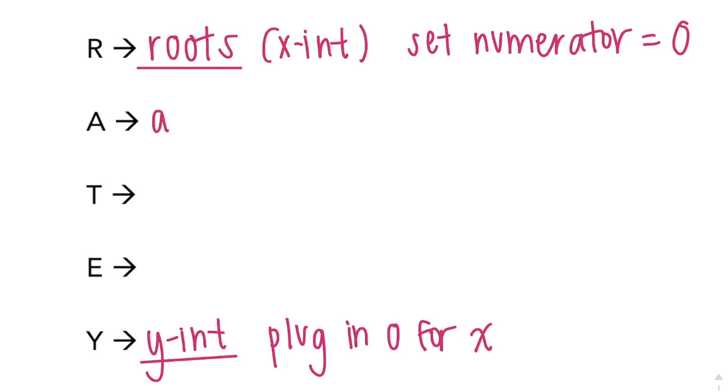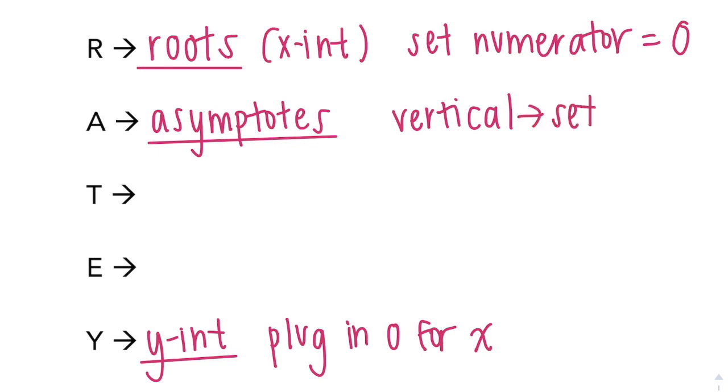A stands for asymptotes. And remember, you find the vertical asymptotes by setting your denominator equal to 0.